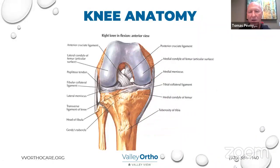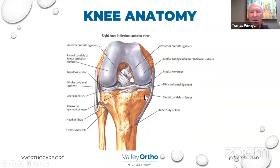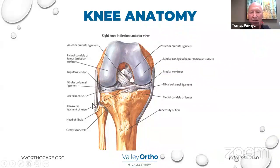Now we get to the intra-articular structures — the structures within the capsule of the knee. This is a right knee with the knee bent, looking at it from the front, with the patella and soft tissues removed. There are four bones that make up the knee: the kneecap or patella, the femur or big thigh bone, the tibia or shin bone, and the fibula. There are also four ligaments, and ligaments by definition connect the bones together — that's what gives us stability. When people get instability, it's usually from a ligament injury. We have two collateral ligaments on the sides. The medial collateral ligament on the inside is the most commonly injured ligament in the knee, but it's outside the knee joint, so it typically heals on its own. The lateral collateral ligament is a more cord-like structure on the outside and is not injured as commonly as the MCL.